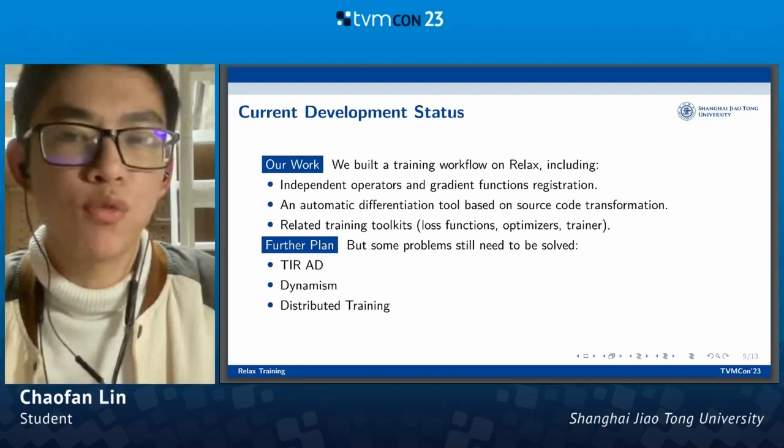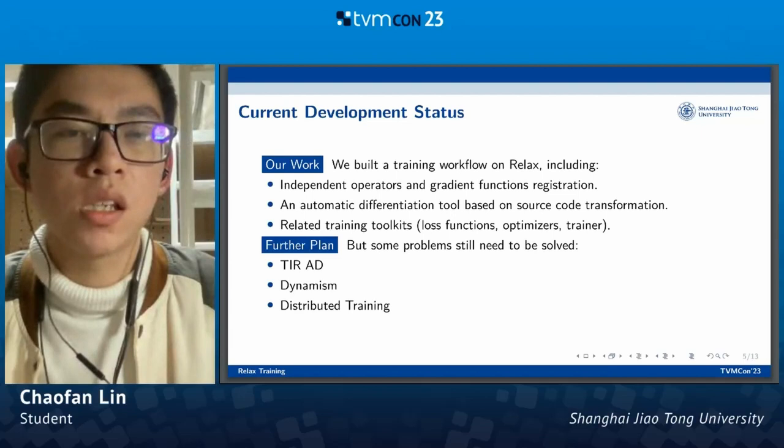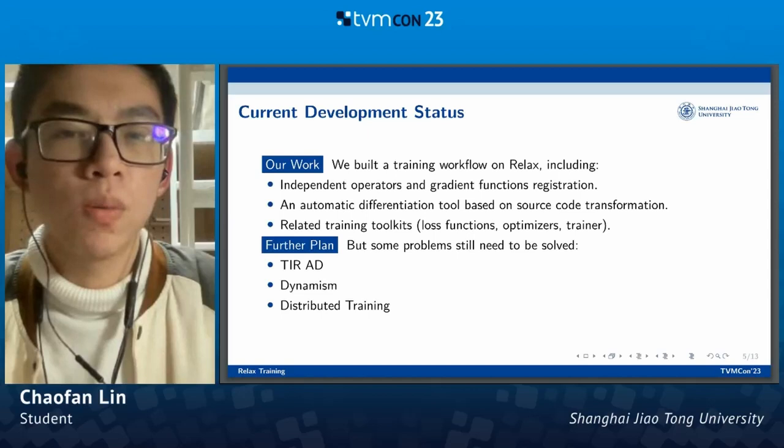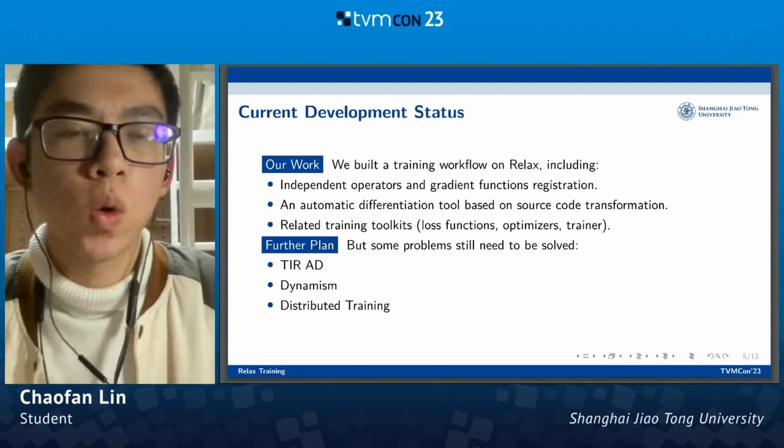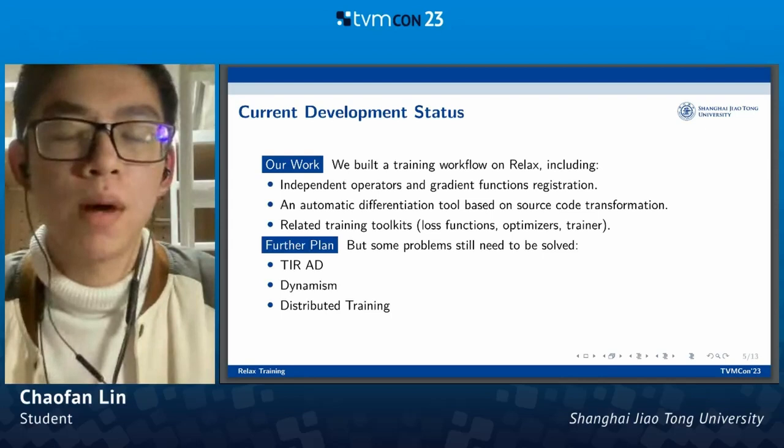Our main work is that we build a RELAX training workflow, including independent operators and gradient functions registration. Here, independent means we are independent from Relay — we don't reuse some codes, it's a new implementation in RELAX. We have an automatic differentiation path, which is a source code transformation from IR module to IR module. We also have some related training tools, such as loss functions, optimizers, and a unified trainer.